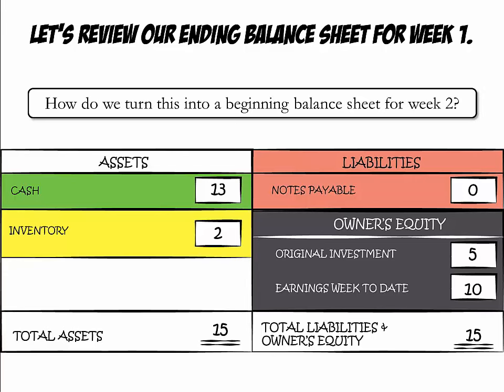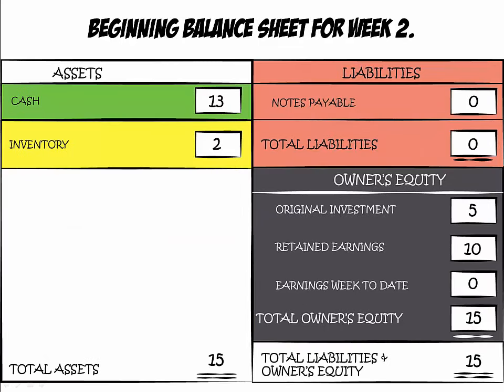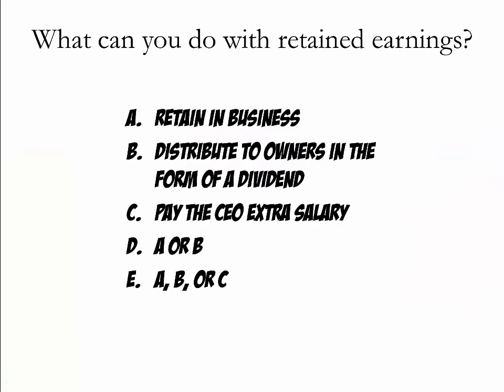How do we turn our ending balance sheet for Week 1 into a beginning balance sheet for Week 2? We will roll up earnings and put them in a new category called Retained Earnings. We will reset earnings week to date to zero because you haven't made any profits yet in Week 2. Retained earnings can either be retained in the business to allow for a liquidity cushion or to invest in the business, or they can be distributed to the owners of the company in the form of a dividend.